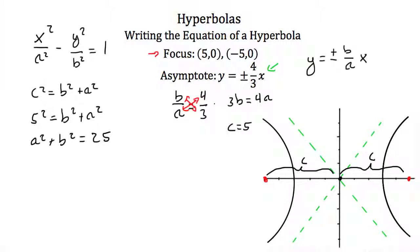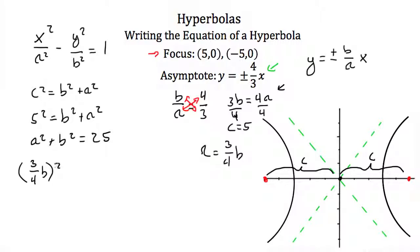Going back to the equation 3b equals 4a and dividing both sides by 4, we find that a equals three-fourths b. Plugging that in for a, we'll have three-fourths b, quantity squared, plus b squared equals 25.